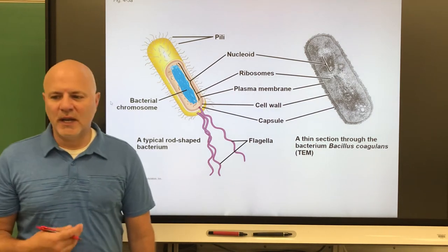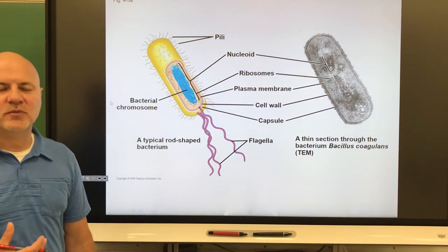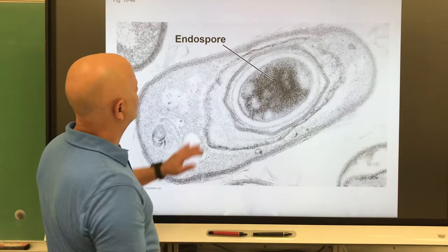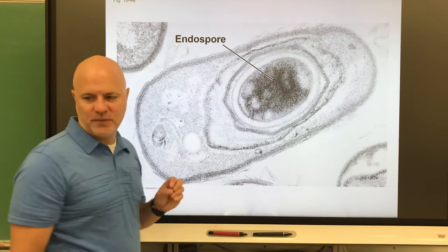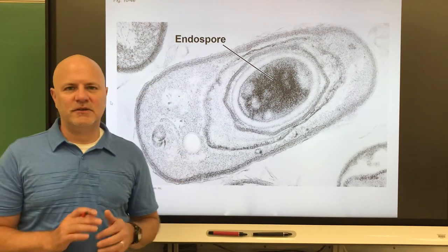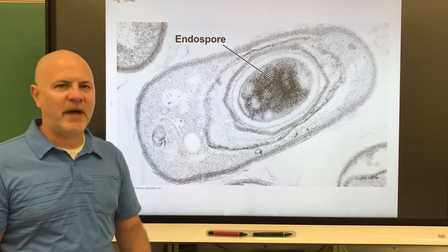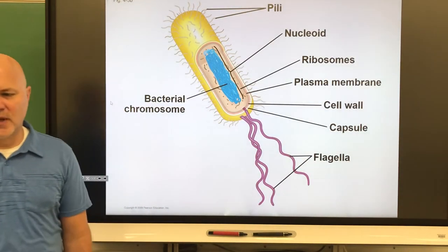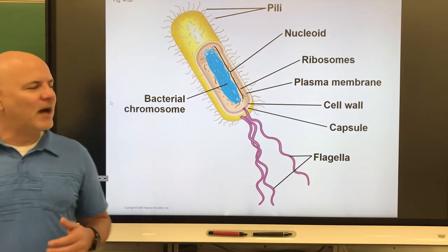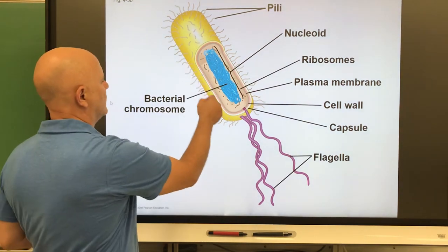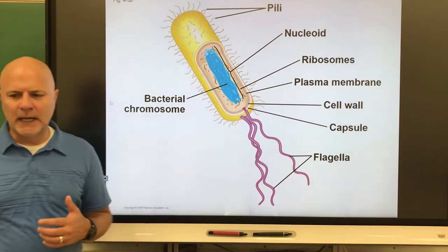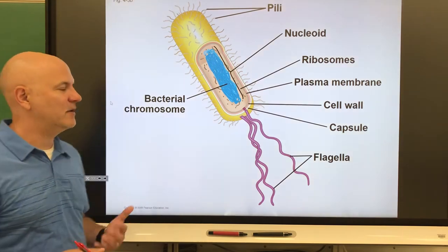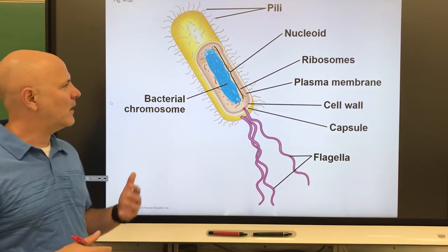Next is an endospore — a walled structure that forms around the DNA and some cytoplasm. This enables the cell to survive harsh conditions; we'll talk about endospores more in a bit. Also, you can see all these little hair-like structures — those are called pili. Pili are short projections on a bacterial cell that help the cell attach to objects, surfaces, and other cells.